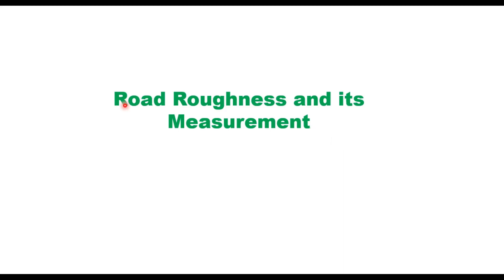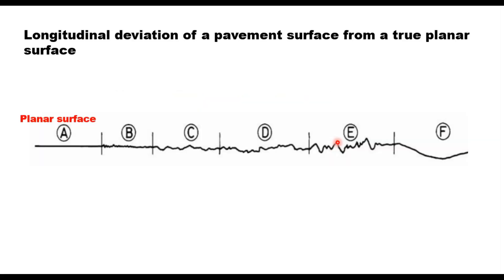Hello friends, today our discussion is on road roughness and its measurement. Road roughness is a key indicator of road condition — it refers to the irregularities or unevenness of the pavement surface, or a longitudinal deviation of a pavement surface from a true flat or planar surface. This deviation can be of different nature.